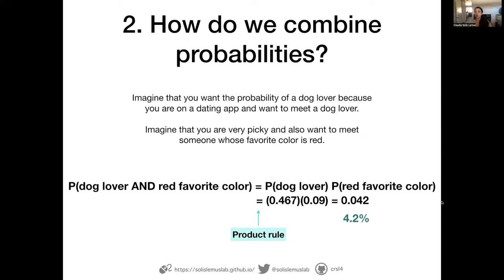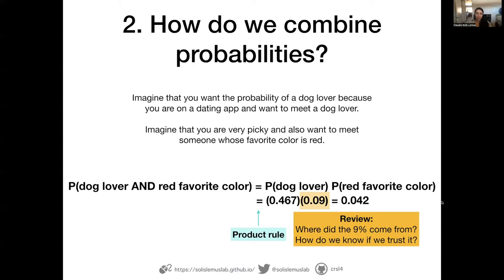It's a smaller number because I'm adding more restrictions — it's not just a dog lover, but a dog lover with red as their favorite color. As you multiply more conditions, you decrease this probability more and more. Now, where could the 9% be coming from? This is also coming from a sample. The 9% comes from grabbing a sample of people, asking their favorite colors, and calculating how many preferred red. We need to ask: is it a large sample, and is it representative of the population?